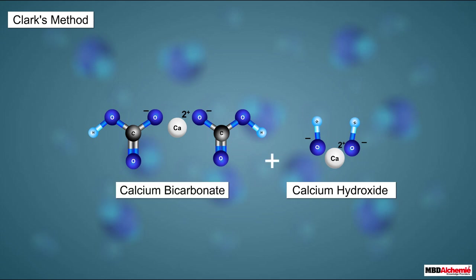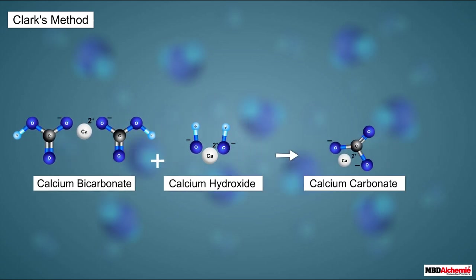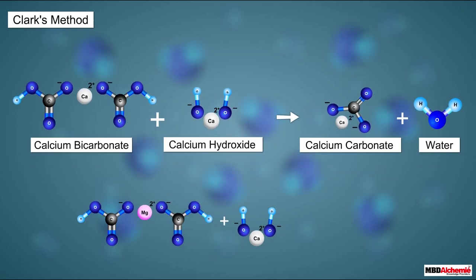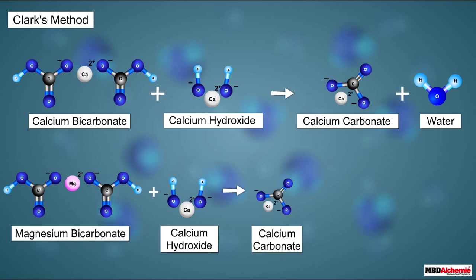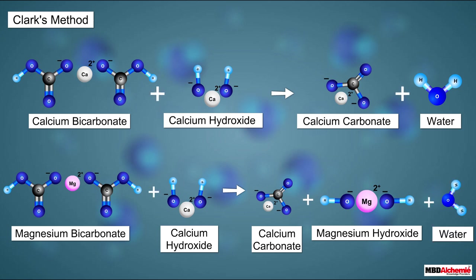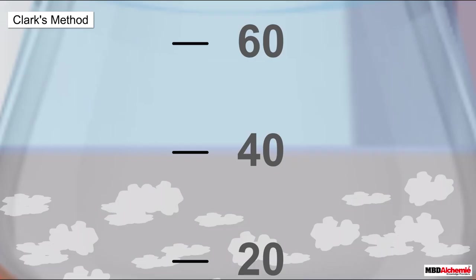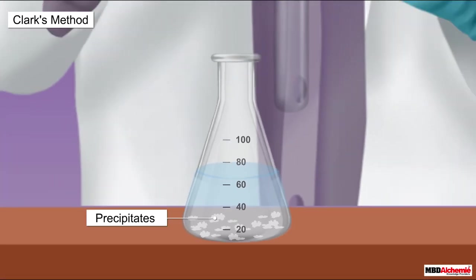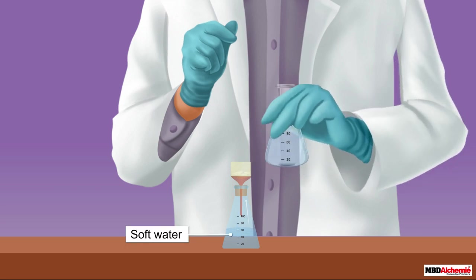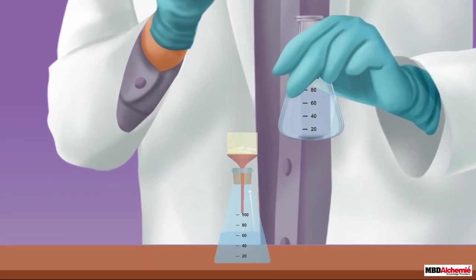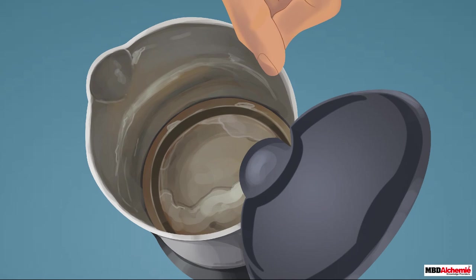In Clark's method, some amount of lime is added to hard water. Lime, which is chemically calcium hydroxide, reacts with calcium bicarbonate to form calcium carbonate and water. At the same time, lime also reacts with magnesium bicarbonate to form calcium carbonate, magnesium hydroxide, and water. The resulting calcium carbonate and magnesium hydroxide form precipitates, and once removed by filtration, the water no longer remains hard.